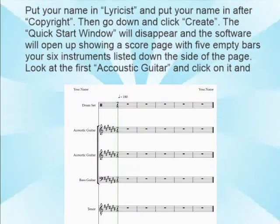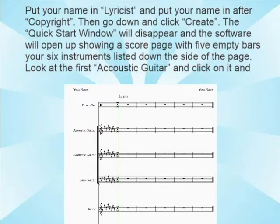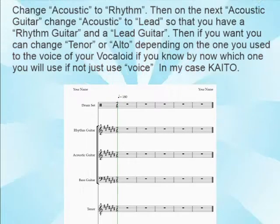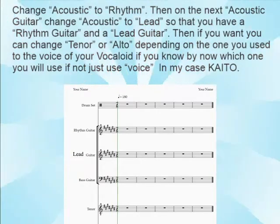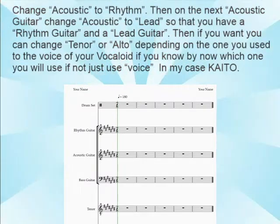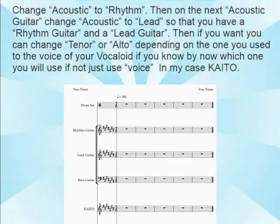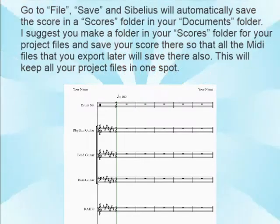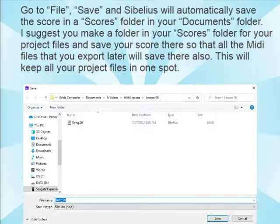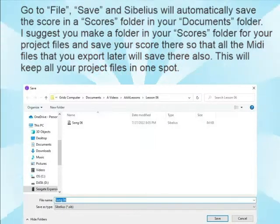The Quick Start window will disappear and the software will open up showing a score page with five initial bars and your instruments listed down the side. Look at the first acoustic guitar and change 'acoustic' to 'rhythm'. Then change the next acoustic guitar to 'lead' so that you have a rhythm guitar and a lead guitar. You can also change tenor or alto to the name of your Vocaloid — in my case, Kaido. Go to File, Save, and Sibelius will automatically save in the Scores folder. Make a folder for your project files so all your MIDI exports will save there too.